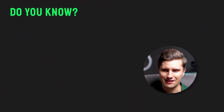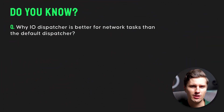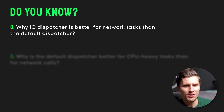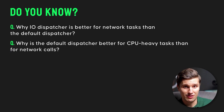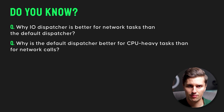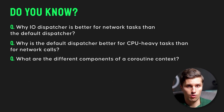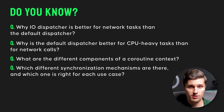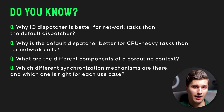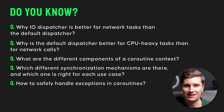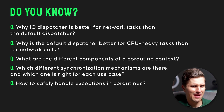If you think you don't need this, can you tell me why the IO dispatcher is better for network tasks than the default dispatcher? And why is the default dispatcher better for CPU-heavy tasks than for network calls? Can you tell me which different parts a coroutine context consists of? Or which different synchronization mechanisms there are and which one is right for which use case?